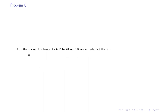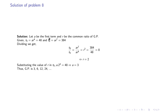Problem 8: if the fifth and eighth terms of a GP are 48 and 384 respectively, find the GP. Let a be the first term and r the common ratio. The fifth term ar^4 = 48 and the eighth term ar^7 = 384. Dividing gives r³ = 384/48 = 8, so r = 2. Substituting into the fifth term, a = 3. The GP is 3, 6, 12, 24.